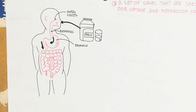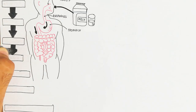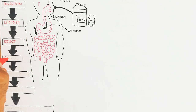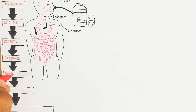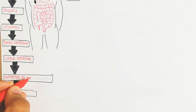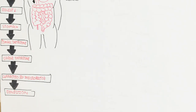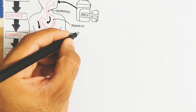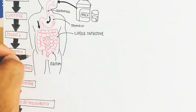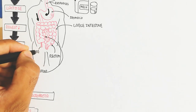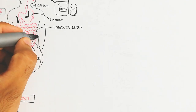When we intake milk, it goes into the stomach, where the whey protein is digested. Lactose is digested mainly in the small intestine, though some passes into the large intestine. The large intestine is unable to digest lactose on its own, so it relies on microbiota — specifically bacteria like E. coli — for lactose digestion.